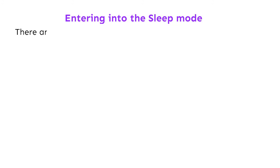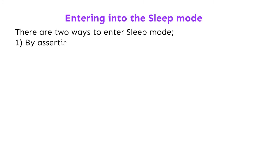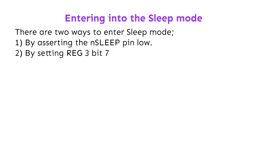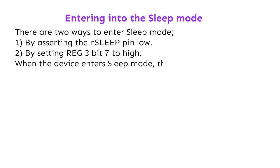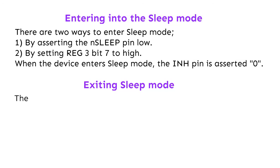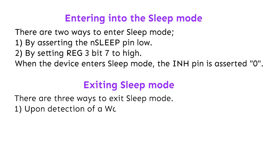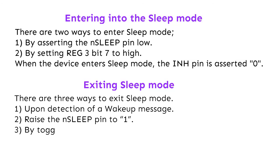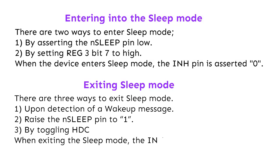Entering sleep mode: there are two ways — 1) by asserting the N-SLEEP pin low, or 2) by setting Reg 3 bit 7 to high. When the device enters sleep mode, the inhibit pin is asserted low. Exiting sleep mode: there are three ways — 1) upon detection of a wake-up message, 2) raise the N-SLEEP pin to 1, or 3) by toggling HDC. When exiting sleep mode, the inhibit pin rises.